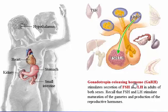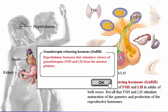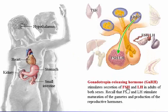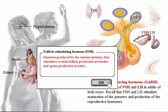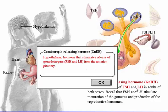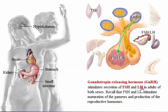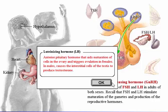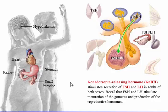Gonadotropin-releasing hormone stimulates secretion of follicle-stimulating hormone (FSH) and luteinizing hormone (LH), together called the gonadotropins, in adults of both sexes. Recall that FSH and LH stimulate maturation of the gametes and production of the reproductive hormones.